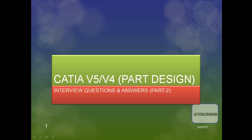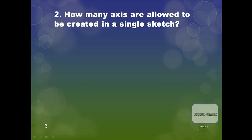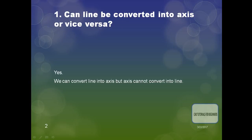The first question is: can a line be converted into an axis or vice versa? Yes, definitely — a line can be converted into an axis, but an axis cannot be converted into a line.